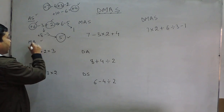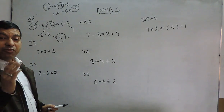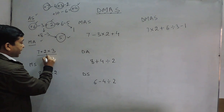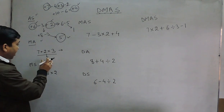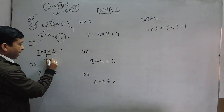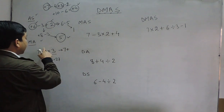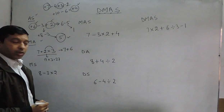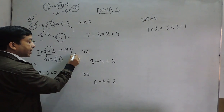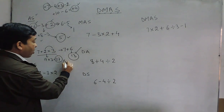MA means multiplication and addition — we must do multiplication first, then add. For the expression 7 plus 2 times 3, one approach adds first: 7 plus 2 equals 9, then 9 times 3 equals 27. The correct way is 7 plus the result of 2 times 3, which is 6, giving the correct answer of 13. So 27 is wrong and 13 is correct.